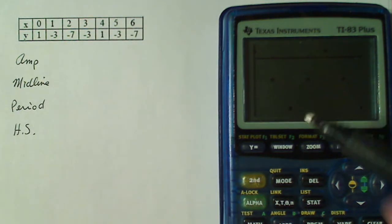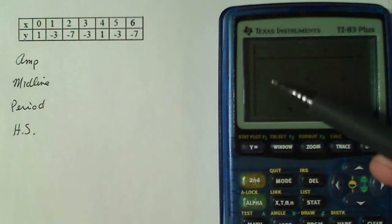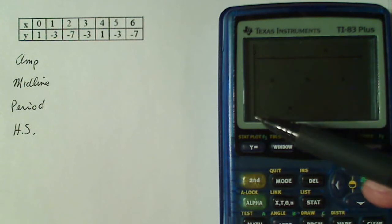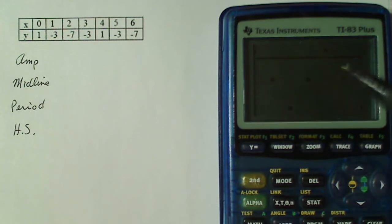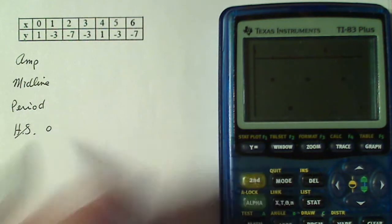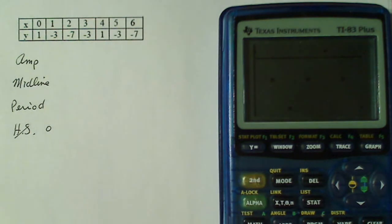Now, right now I'm going to tell you the horizontal shift, there is none because the regular cosine graph starts at its high point on the vertical axis and so does this graph. So I'm going to say that there is no horizontal shift or the horizontal shift is zero.